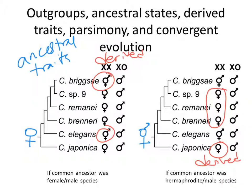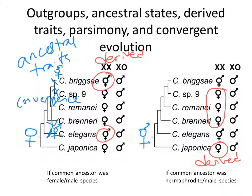The other thing I want to make sure is really clear: I think I said this confusingly when I summarized last class. On this tree, we agreed there were two positions where hermaphroditism evolved — those were the branches leading specifically to the two species that are currently hermaphrodites. That's the most parsimonious explanation: the ancestor was female and there were two independent gains of self-fertility in the phylogeny. That's convergent evolution, also called parallel evolution, when the same trait evolves twice separately.